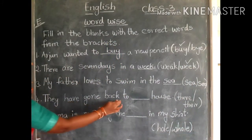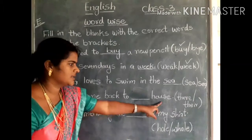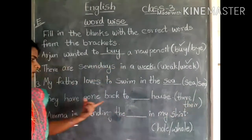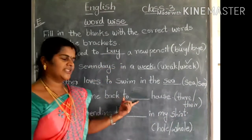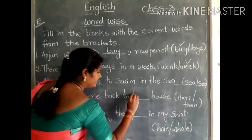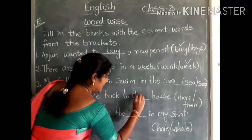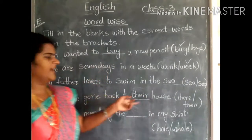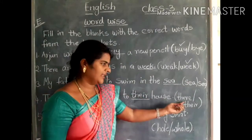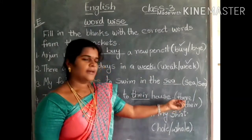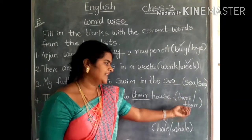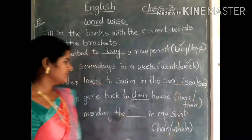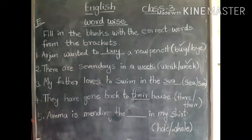Fourth sentence: They have gone back to their house. The answer is T-H-E-I-R — 'their.' They have gone back to their house. Here 'there' means a place or position, and 'their' means belonging to somebody.